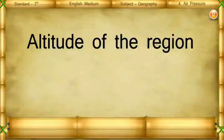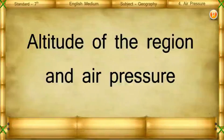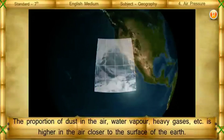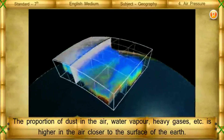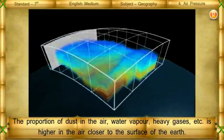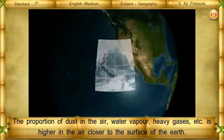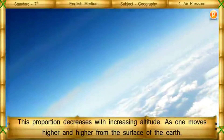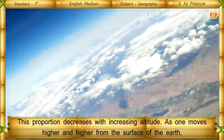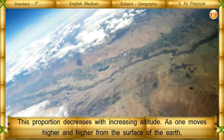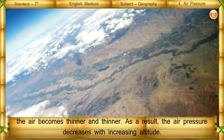Altitude of the region and air pressure: The proportion of dust, water vapor, heavy gases, etc. in the air is higher closer to the surface of the Earth. This proportion decreases with increasing altitude. As one moves higher and higher from the surface of the Earth, the air becomes thinner and thinner. As a result, air pressure decreases with increasing altitude.